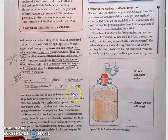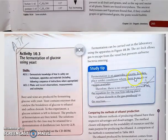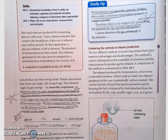Alcoholic drinks such as beer and wine are made on a large scale in vast quantities in copper or steel fermentation vats. Beer is made from barley with hops and other ingredients added to produce distinctive flavors. Wine is made by fermenting grape juice. Beer contains about 4 percent by volume of ethanol, whereas wine contains about 8 to 14 percent. This fermentation can be carried out in the laboratory using apparatus in Figure 10.16. The air lock allows gas to escape but prevents airborne bacteria from entering.